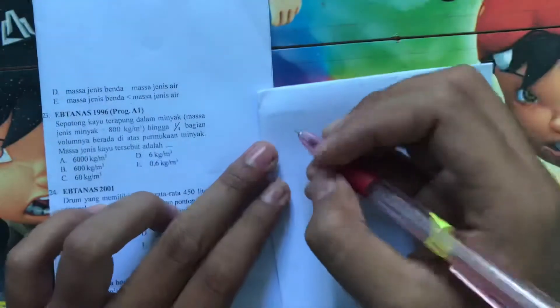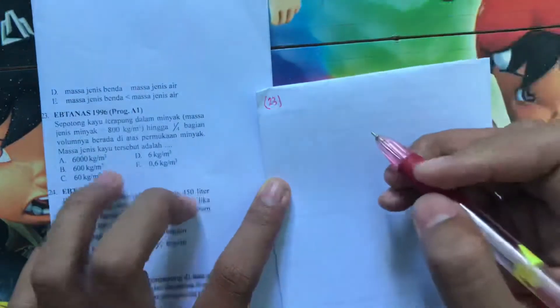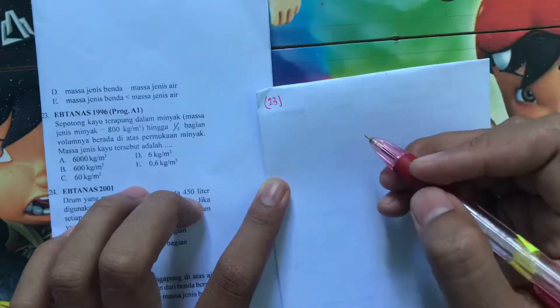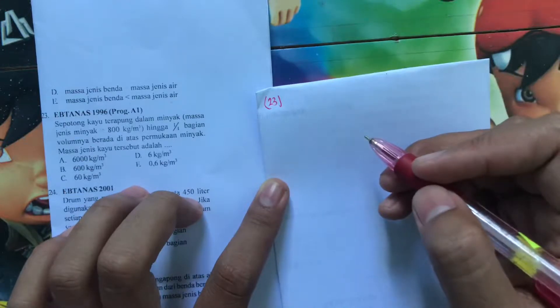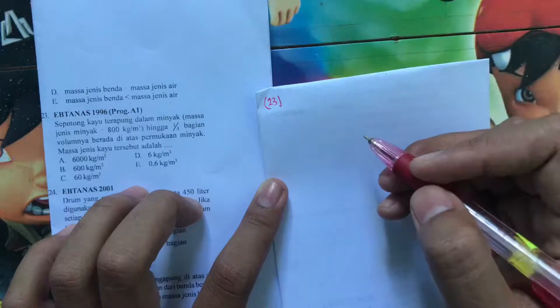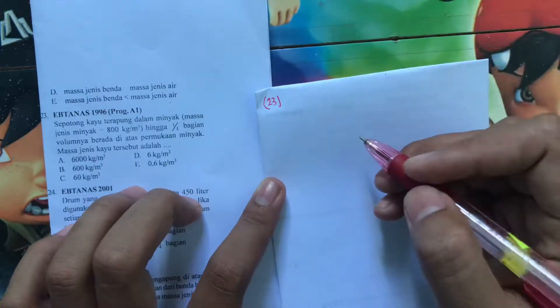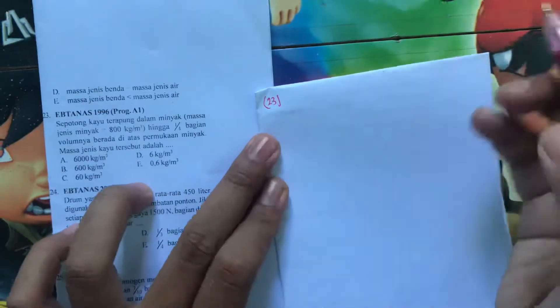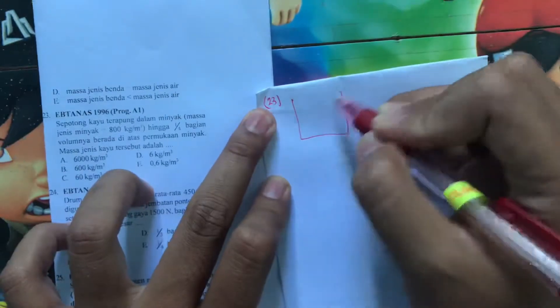Yuk, ke soal selanjutnya nomor 23. Sepotong kayu terapung dalam minyak. Masa jenis minyak 800 kg meter kubik. Hingga seperempat bagian volumenya berada di atas permukaan minyak. Masa jenis kayu tersebut adalah.